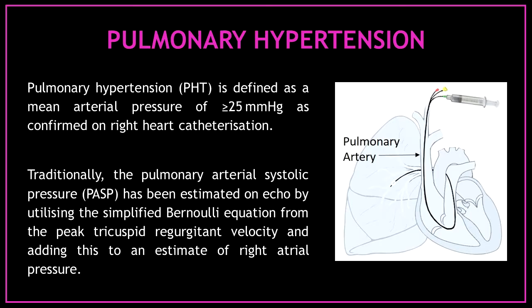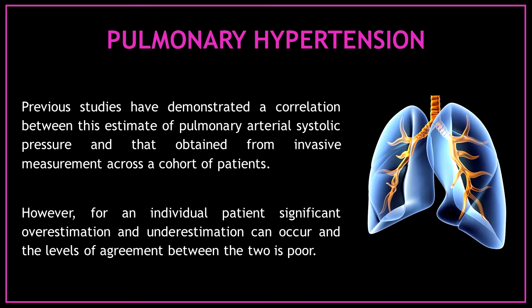Traditionally, the pulmonary artery systolic pressure has been estimated on ECHO by utilizing the simplified Bernoulli equation from the peak tricuspid regurgitant velocity and adding this to an estimate of right atrial pressure. Previous studies have demonstrated a correlation between this estimate and that obtained from invasive measurement across a cohort of patients. However, for an individual patient, significant overestimation and underestimation can occur and the levels of agreement between the two is poor.